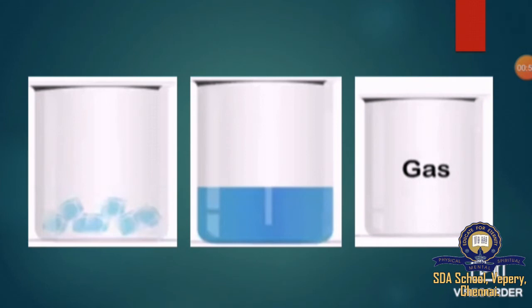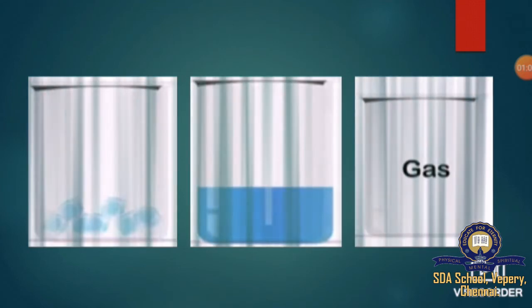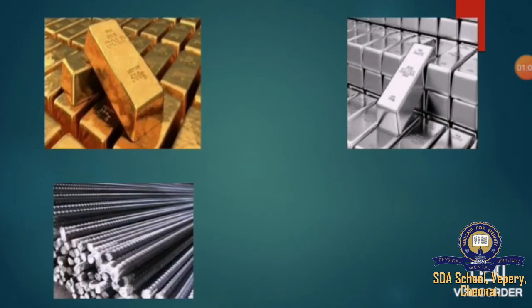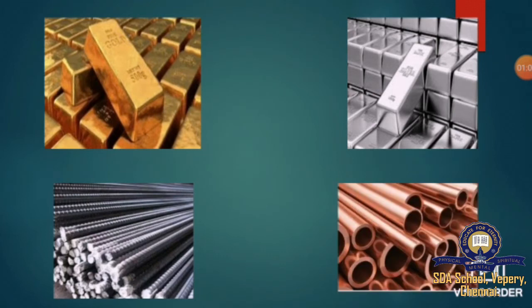Change in state can be brought about by changing the temperature and pressure. Other substances also behave similarly at different temperatures and pressures. Even gold, silver, iron and copper can occur in all three states, but not under common conditions.